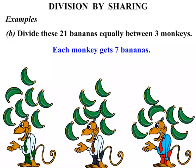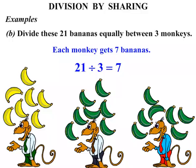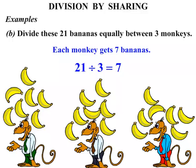So we had 21 bananas and we split it up three ways between three monkeys. So we say that 21 divided by 3, the answer was 7. Excellent. Well that concludes the lesson. But just before we go, let's change those green bananas back to yellow — much more tasty.